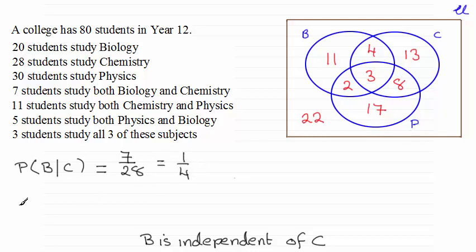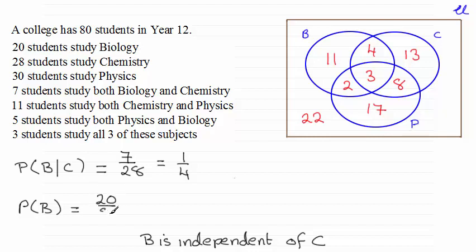Now if we look at the probability of a student being picked just doing biology, we've got how many students doing biology. We see that there are 20 students out of a total of 80 students in the college. So that's 20 out of 80, and if you reduce this down, it equals a quarter. So you can see we've got exactly the same probability.